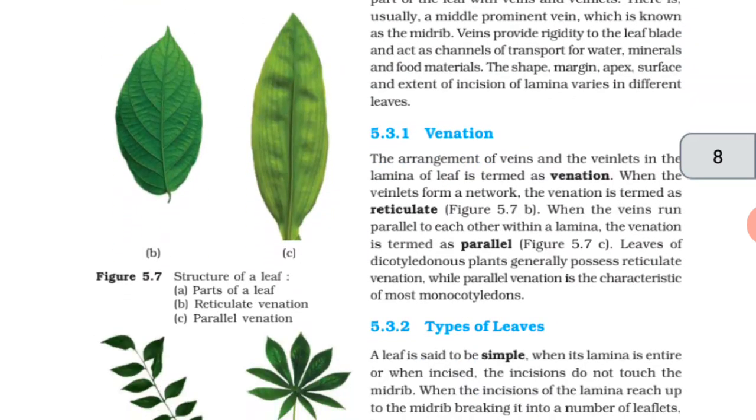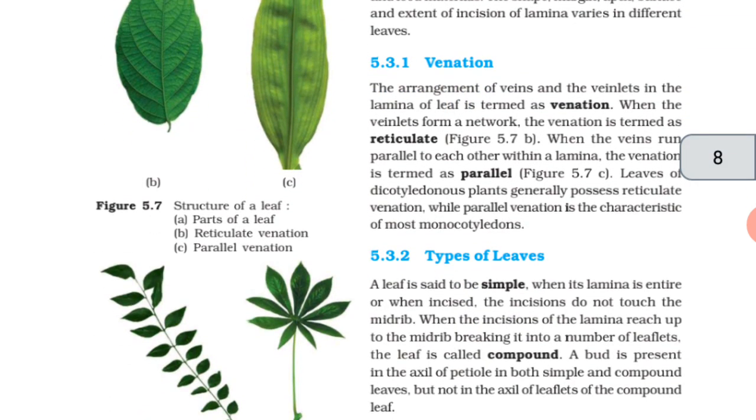Venation. The arrangement of veins and veinlets in the lamina of leaf is termed as venation. When the veins form a network, the venation is termed as reticulate. When the veins run parallel to each other within lamina, the venation is termed as parallel. Leaves of dicotyledonous plants generally possess reticulate venation, while parallel venation is the characteristic of most monocotyledons.